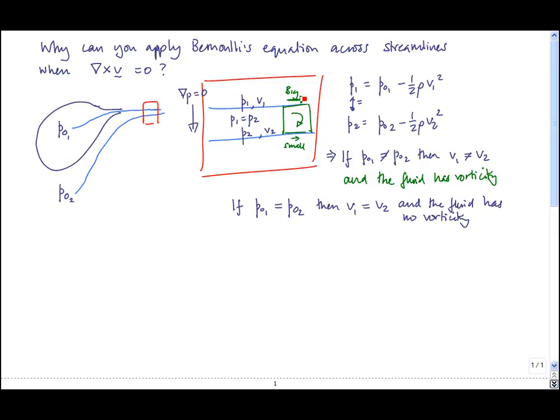So what we've shown here is that for straight streamlines up here, no vorticity means that every streamline has the same stagnation pressure, and therefore you can apply Bernoulli across streamlines.